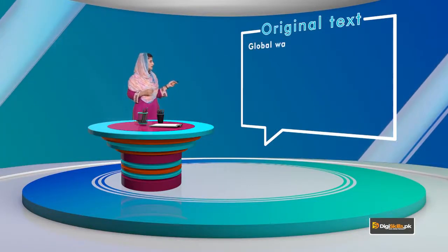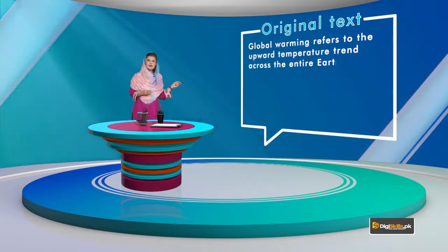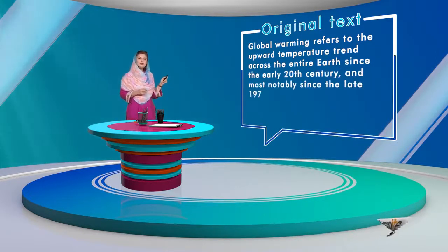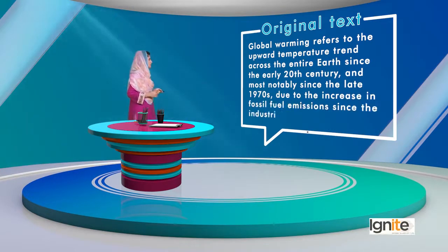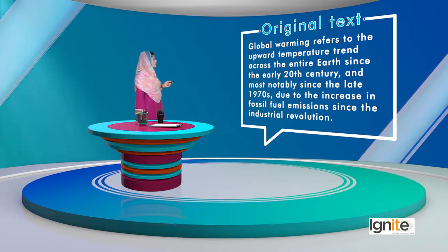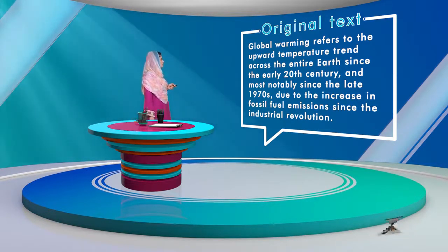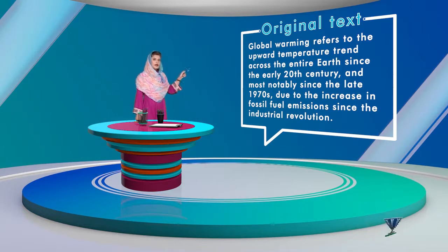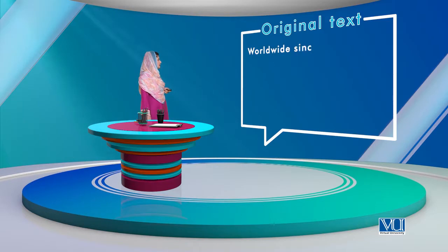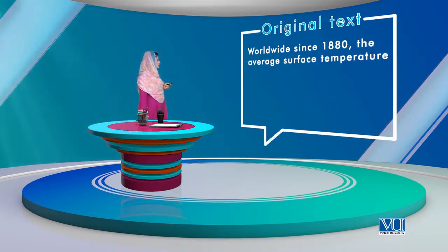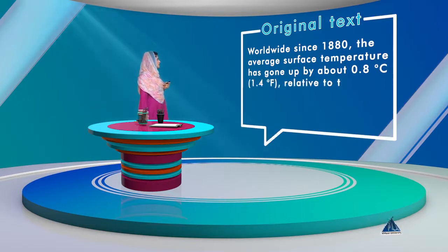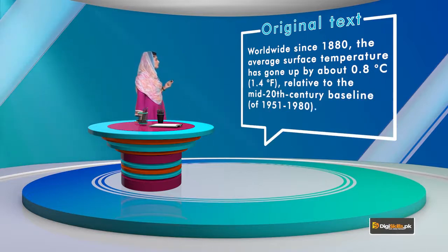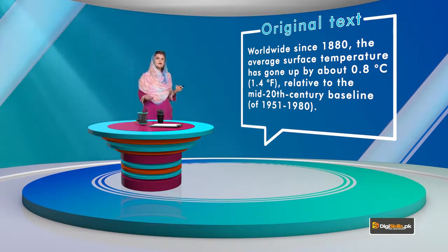Let's see — this is a text which is originally taken from a website, and then we have modified it. How can we modify it for a sixth grade audience? Let's look at the original text first: 'Global warming refers to the upward temperature trend across the entire earth since the early 20th century and most notably since the late 1970s due to the increase in fossil fuel emissions since the Industrial Revolution.' So this is a very long sentence — especially if you are writing for a younger audience. 'Worldwide since 1880, the average surface temperature has gone up by about 0.8 degree centigrade relative to the mid-20th century baseline of 1951 to 1980.' Now this last piece of information is a little too technical — it is not for a layman; experts would better understand it.